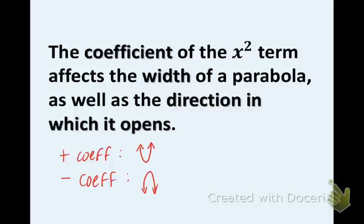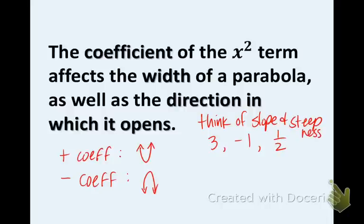Now, depending on the number in front: because 3 is greater than 1/2 and 1 is greater than 1/2, the parabola with 1/2 as the leading coefficient is the widest. Think of slope, a concept that we talked about several chapters ago, and steepness. If it's a fractional slope, it goes up slower. Whereas if it's a whole number slope, it's going to go up faster. The same thing applies. When we have a fraction in front of the coefficient, it's going to be wider.